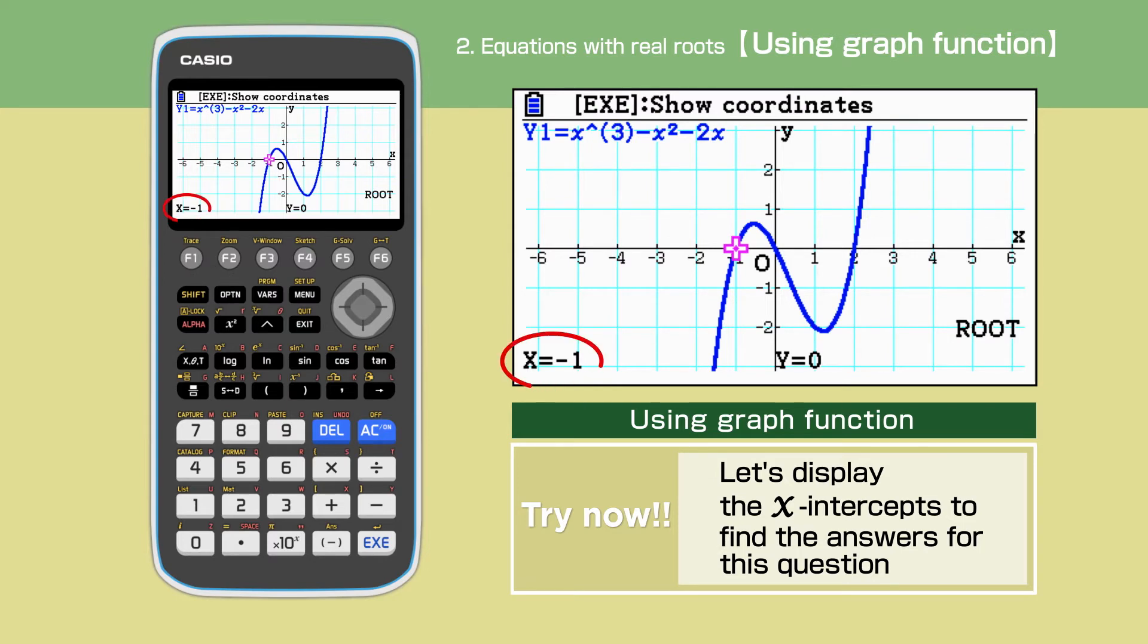The first interception of the x-coordinate is minus 1. Press the right side of the cursor to find other solutions. The other solutions are 0 and 2, which are the same as the answers found in the previous part.